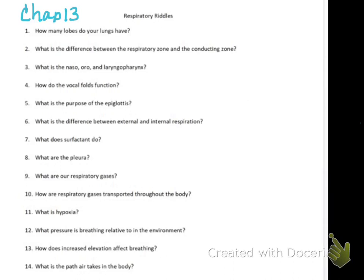Question three: what is the nasopharynx, oropharynx, and laryngeal pharynx? This question has to do with real estate - location, location, location. The pharynx connects your mouth and nose to your larynx and trachea. The difference between the nasopharynx, oropharynx, and laryngeal pharynx is simply location. The nasopharynx is the posterior aspect of your nasal cavity, the oropharynx is the posterior aspect of your oral cavity, and the laryngeal pharynx is the border between the pharynx and larynx.